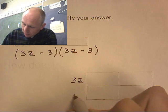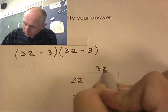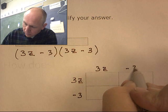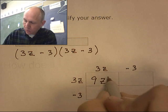3z minus 3. 3z times 3z, that's 9z squared.